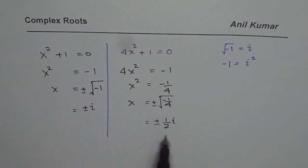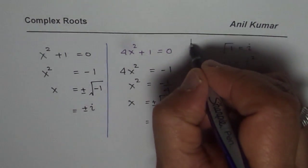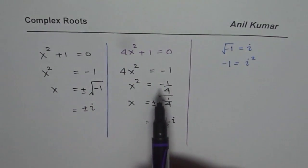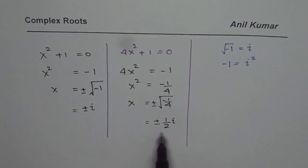So that becomes the solution for the equation 4x² + 1 = 0. So that is how we can actually find the solution for quadratic equations which do not have any real solution.